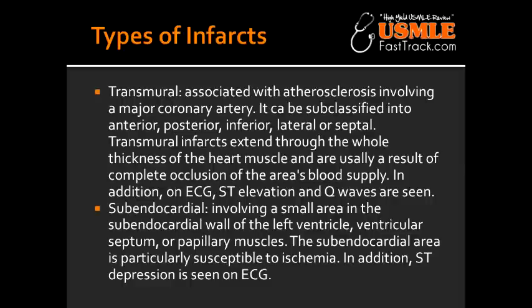Describe transmural infarct. Transmural infarct is associated with atherosclerosis involving a major coronary artery. It can be subclassified into anterior, posterior, inferior, lateral, or septal. Transmural infarcts extend through the whole thickness of the heart muscle and are usually a result of a complete occlusion of the area's blood supply. On ECG, ST elevation and a Q wave are generally seen.